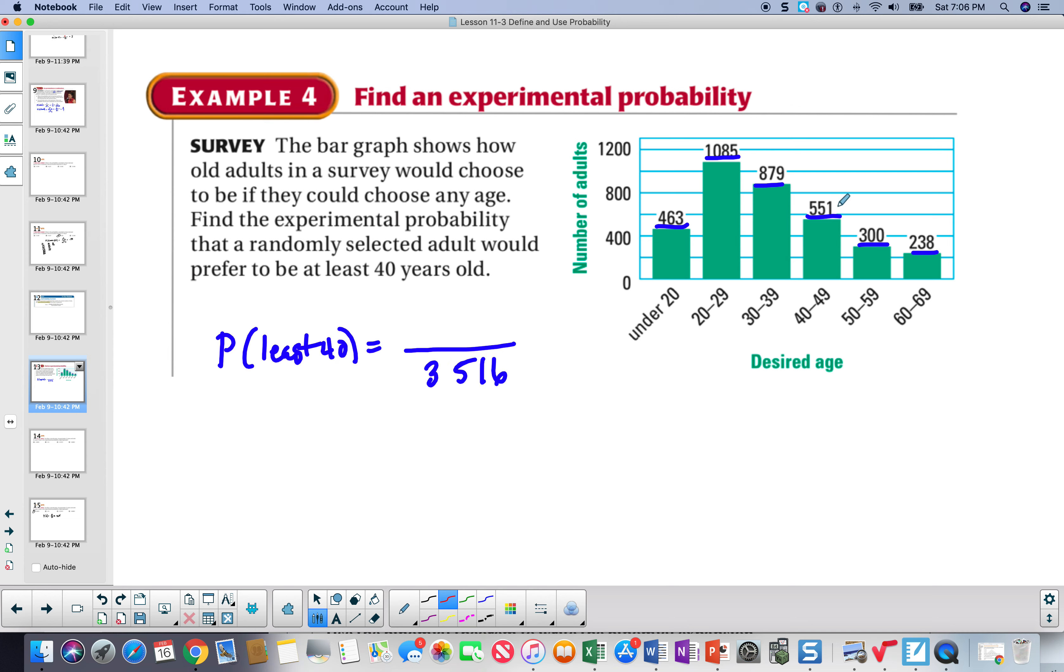Now, we're going to find the number of adults that are at least 40. And when we add up all those numbers, that's 1,089. And we can now round. And that will be 0.310. And that's the probability of someone we choose at least 40 years old.